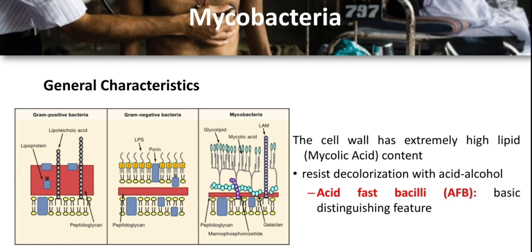For general characteristics, organisms belonging to the genus Mycobacterium are aerobic, although some may grow in reduced oxygen concentrations. They are non-spore forming except for Mycobacterium marinum, non-motile, very thin, slightly curved or straight rods, usually 0.2 to 0.6 micrometers wide and 1 to 10 micrometers in size. Some species may display a branching morphology.